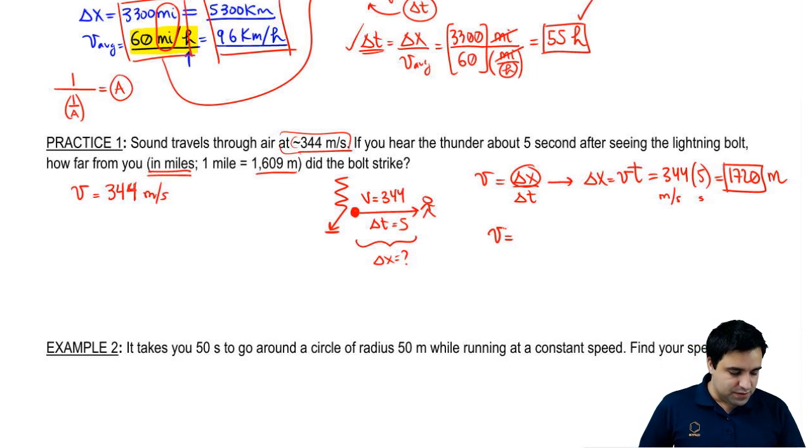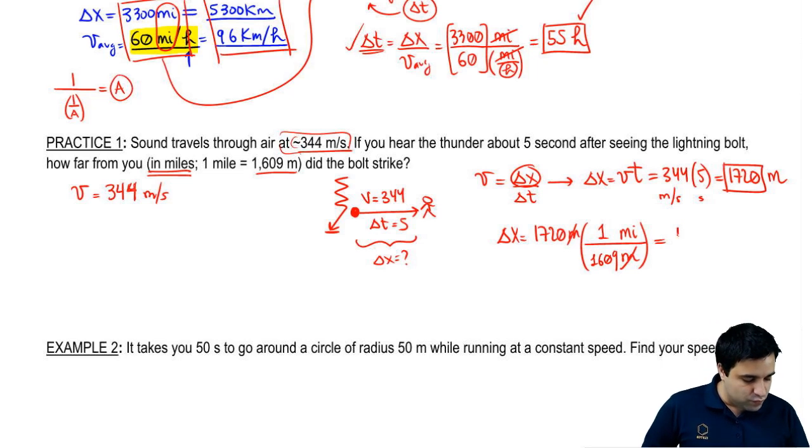So I can say velocity, but I'm sorry, rather distance, delta x displacement is 1720. And now I can just convert. I want to get rid of meters and into miles. One mile is 1609 meters. And if you do this, I have it here, is 1.07 miles.